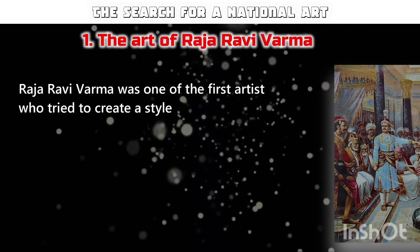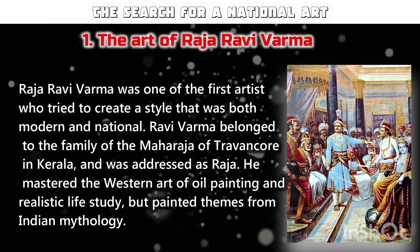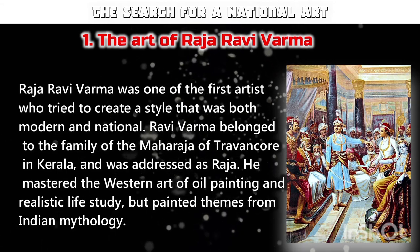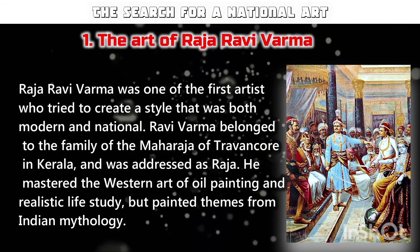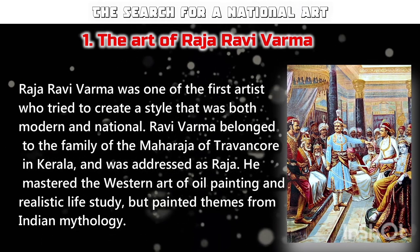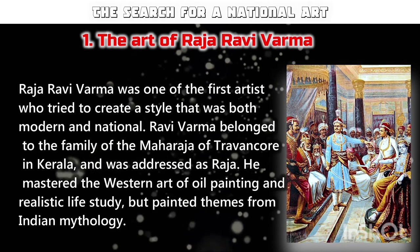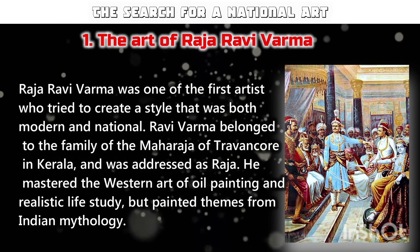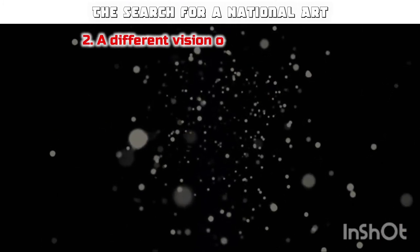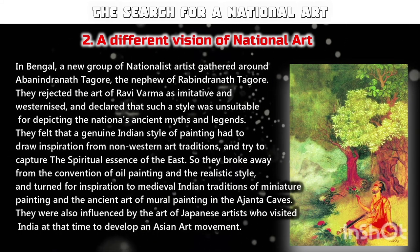Raja Ravi Verma, who belonged to the family of the Maharajas of Travancore in Kerala, was the artist who created both modern and national styles. He mastered the western art of oil painting and realistic life study. But later he was rejected by nationalist artists like Rabindranath Tagore, who felt that a genuine Indian style of painting had to draw inspiration from non-western art traditions and capture the spiritual essence of the East. They were influenced by Japanese artists, and their art turned to Indian traditions of miniature painting and ancient mural painting, as seen in the Ajanta Caves.